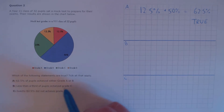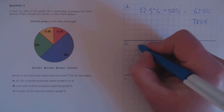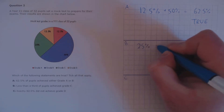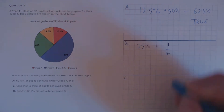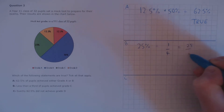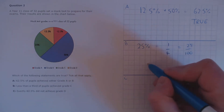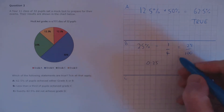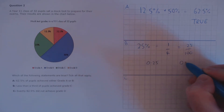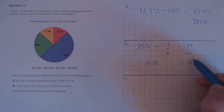B: less than a third of pupils achieved Grade C. Grade C is 25%, which as a fraction is 1/4. We could also find that by writing 25/100 and simplifying to 1/4. 1/4 is the same as 0.25, and we need to compare that to a third, which is 0.33. 0.25 is less than a third, so this is true.